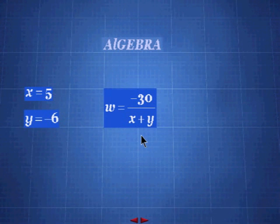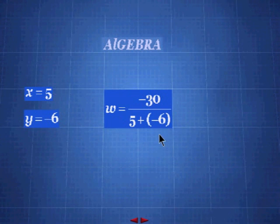So now let's do the next operation. We have x plus y. Since x equals 5 and y equals minus 6, we have 5 plus minus 6.